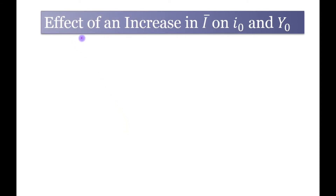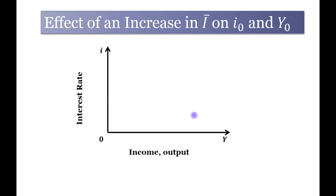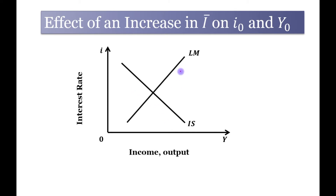We will look at the effect of an increase in autonomous investment spending on equilibrium interest rate and equilibrium output. We have taken income or output on the horizontal axis and interest rate on the vertical axis. This is the IS schedule and this is the LM schedule. The intersection point is the equilibrium point — equilibrium interest rate is OI₀ and equilibrium output level is OY₀.